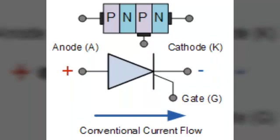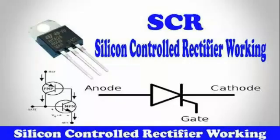We can see here this is the symbolic representation of the SCR: P, N, P, N. It has three terminals anode, cathode and gate. The gate controls the total current of the SCR. So this is also known as silicon controlled rectifier. It is controlled by the gate current, means anode to cathode current is controlled by the gate current.